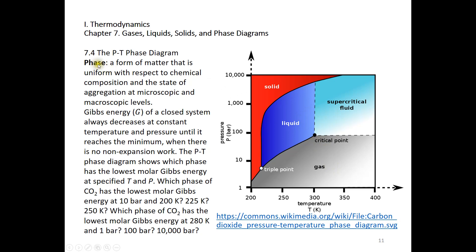Now let's define phase. It's a form of matter that is uniform with respect to chemical composition and the state of aggregation at both microscopic and macroscopic levels. For example, if you mix liquid water and liquid vegetable oil, you will still form two phases because they are not miscible — oil and water are not soluble in each other, so you have two different liquid phases.